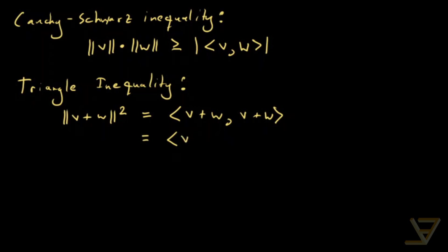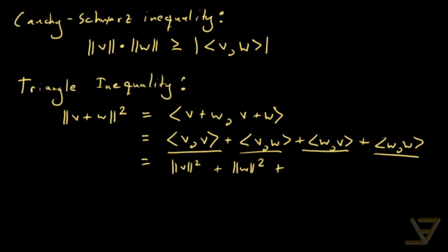we split this into four inner products: ⟨v, v⟩ + ⟨v, w⟩ + ⟨w, v⟩ + ⟨w, w⟩. This equals ||v||² + ||w||², and by commutativity these two are the same, so it's just 2⟨v, w⟩.